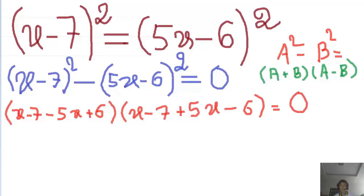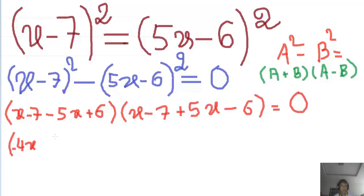Right now, you can write 4x, because minus 5x plus x equals minus 4x. So here is minus 4x, minus 4x, minus 1. Minus 4x minus 1 equals... minus 7 plus 6 equals minus 1. Minus 1 here, okay.